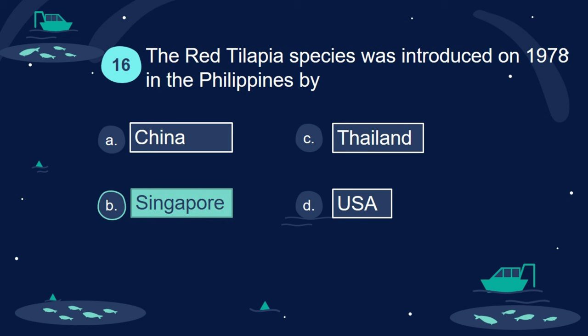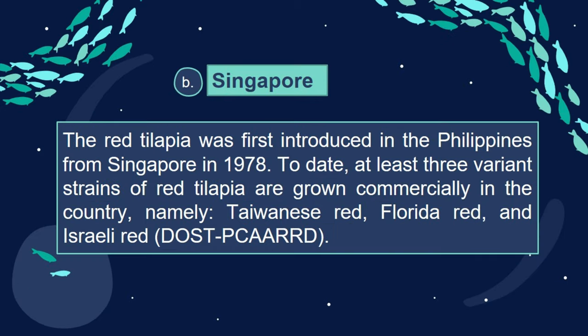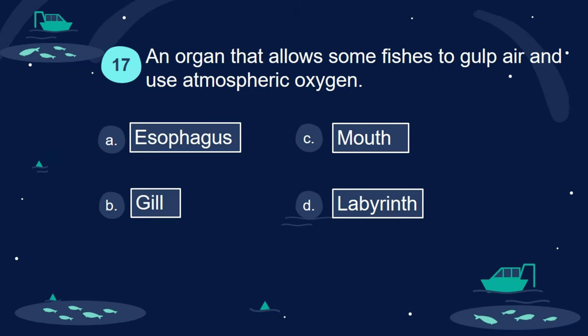Answer: B. Singapore. The red tilapia was first introduced in the Philippines from Singapore in 1978. To date, at least three variant strains of red tilapia are grown commercially in the country, namely, Taiwanese red, Florida red, and Israeli red.